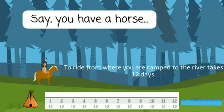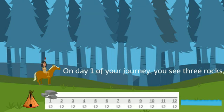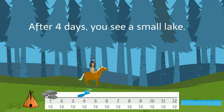Say you have a horse. To ride from where you are camped to the river takes twelve days. On day one of your journey, you see three rocks. After four days, you see a small lake.